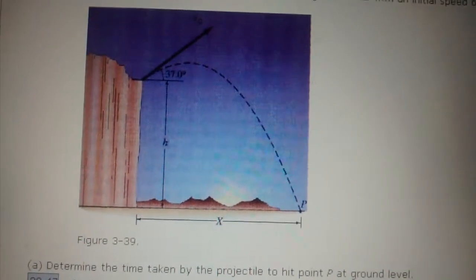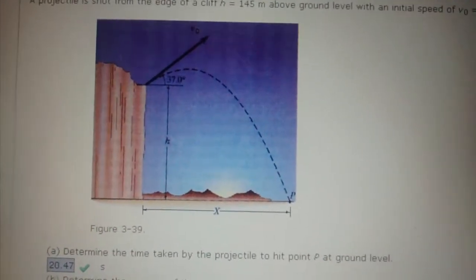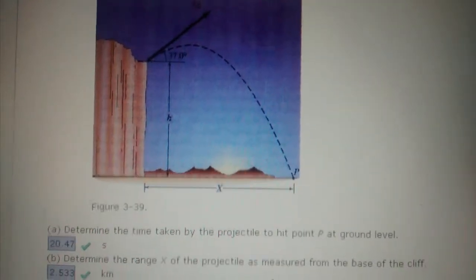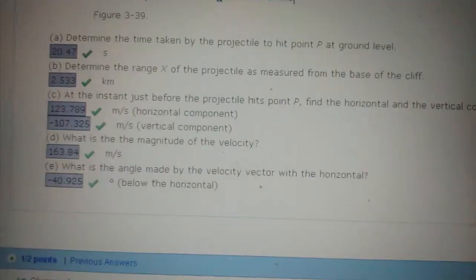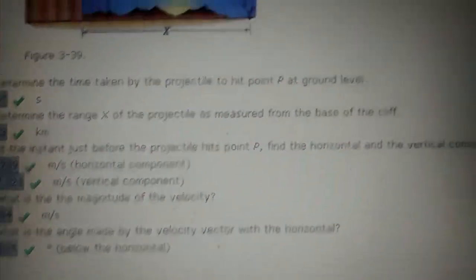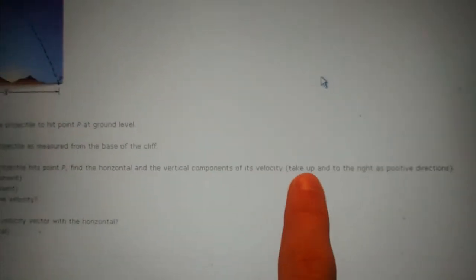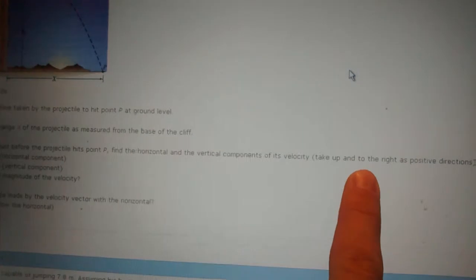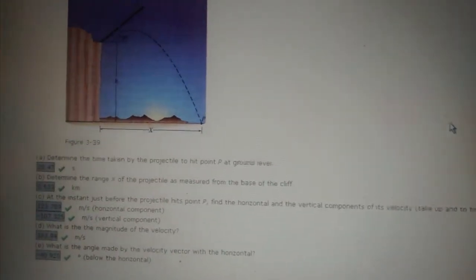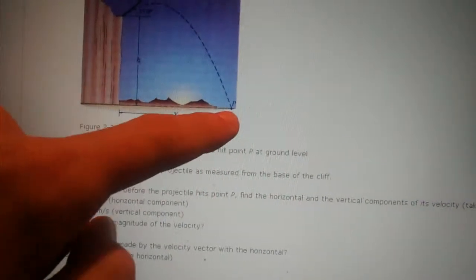So the next part of our problem is, it goes like this. At the instant just before the projectile hits P, find the horizontal and vertical components. Find the horizontal and vertical components, take up and to the right as positive directions. Aha! Up and to the right are positive directions. That's also very important. Looking for the horizontal and vertical components.